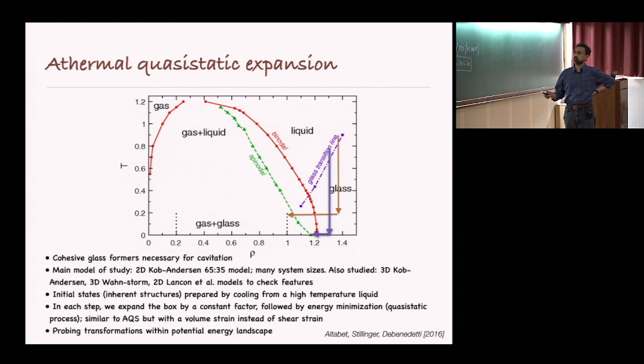The first important statement is that in order for cavitation to happen, you need cohesive glass formers. The phase diagram of the cohesive glass former or any attractive liquid has this form. You have a gas liquid at high densities, and then you have this phase coexistence region in between.